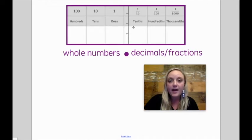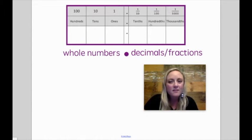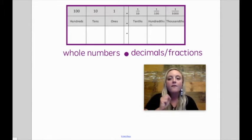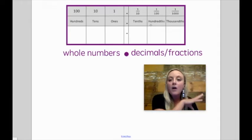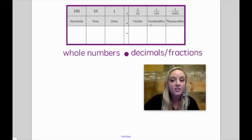After the decimal point, we have our tenths, our hundredths, our thousandths. As you can see, even though they have words in them like hundred and thousandths, the further I go to the right, the smaller the value of that digit will be.